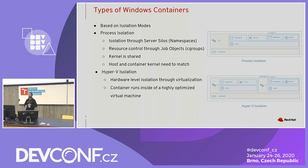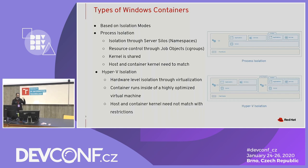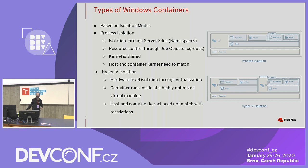That's the reason for all this optimization. With Hyper-V isolation, your host kernel and container kernel don't need to match because you have a VM. There are still some restrictions though — you can't take a container built for Server 2019 and run it on a Windows Server 2016 host.